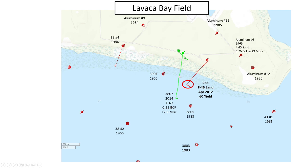That's the first well we're going to be looking at. Here's another well we're going to show some information on, and we're going to show a type log on this well to the south. But the well we're going to be evaluating is the 3905 in the F46 sand, and it is a producing well.